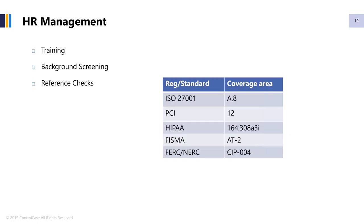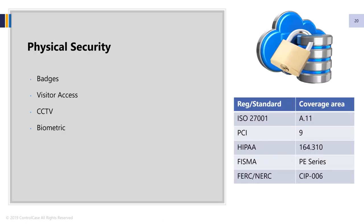Next is HR management. From an HR management perspective, it is important to ensure that the people aspect is looked at from an overall perspective. This could include things like training, background checks, hiring practices, and so forth. Again, all regulations have some components of HR management.